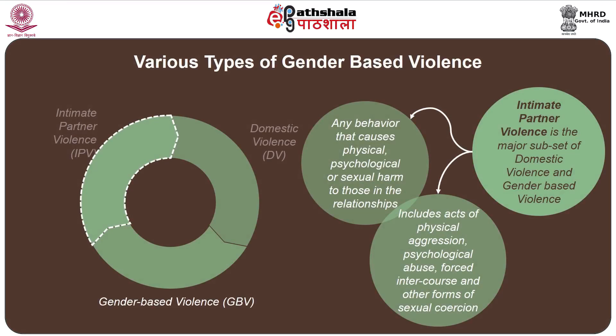Intimate partner violence is defined as any behavior within an intimate relationship that causes physical, psychological, or sexual harm to those in the relationship. This includes acts of physical aggression, psychological abuse, forced intercourse and other forms of sexual coercion, and controlling behaviors such as isolating a person from their family and friends or restricting their movements. Intimate partner violence is a major subset of both domestic violence and gender-based violence.